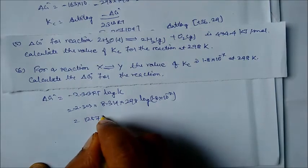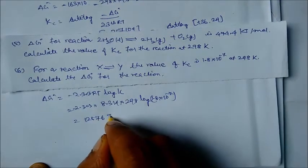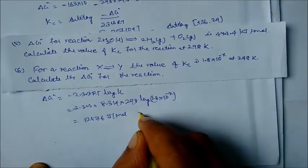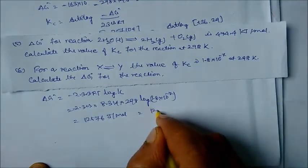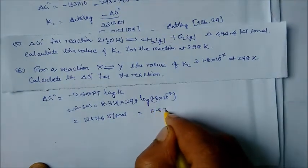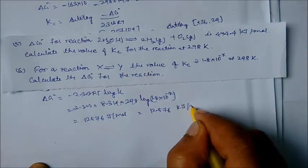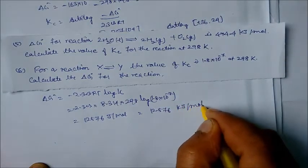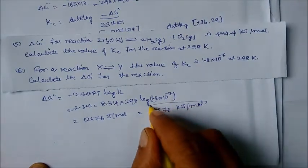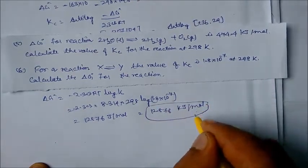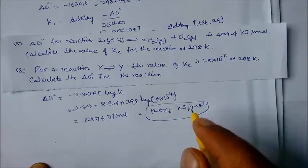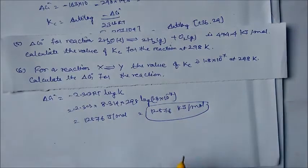Solving gives ΔG° = 12576 J/mol, or 12.576 kJ/mol. We normally express the answer in kJ/mol as it is more convenient.